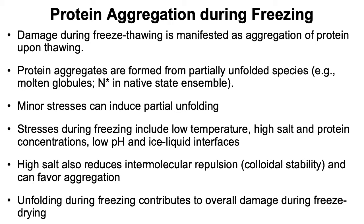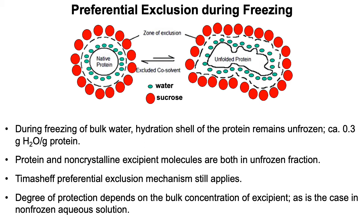During freezing, we are forming ice and the protein is in the non-ice phase. Protein aggregation will occur because proteins are perturbed by the various stresses that occur during freezing. Also, the high salt will favor intermolecular interactions. The degree of unfolding during freezing can be impacted by native state stability as well as colloidal stability. And any unfolding that occurs during freezing obviously will contribute during freeze drying. During freezing, the protein goes to the non-ice phase with unfrozen water, so essentially everything is still the same as it would be in unfrozen aqueous solution, and the preferential exclusion mechanism applies. The degree of protection during freezing depends on the initial bulk concentration of the additive.